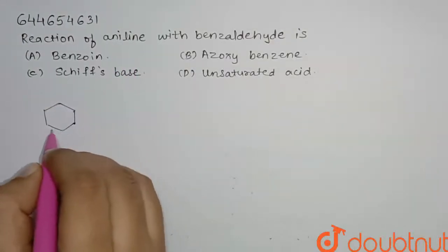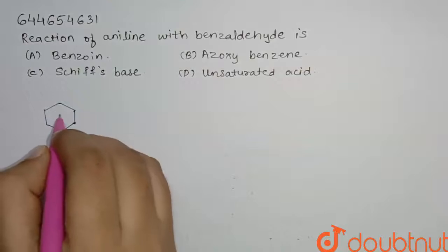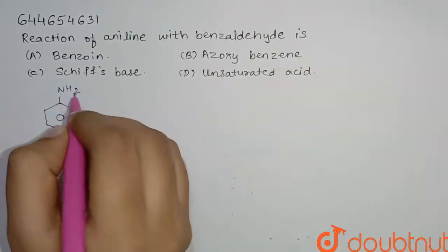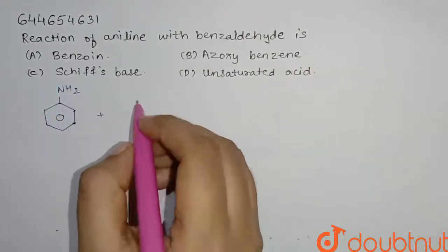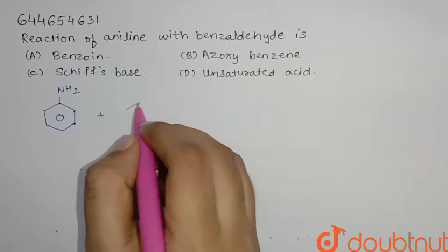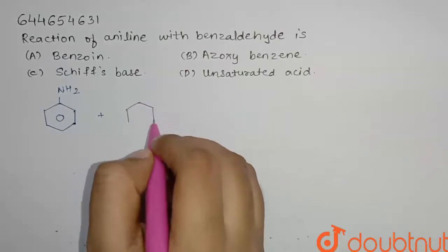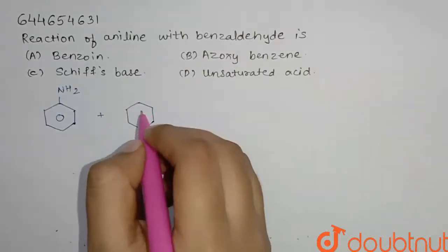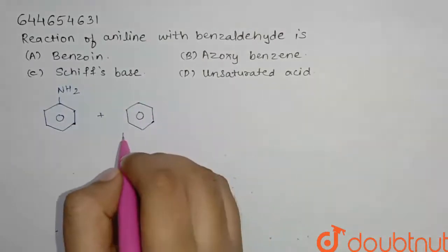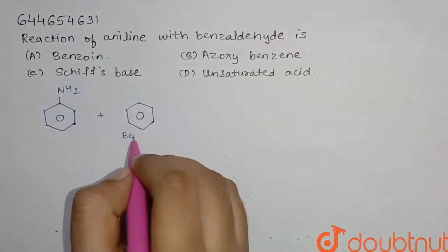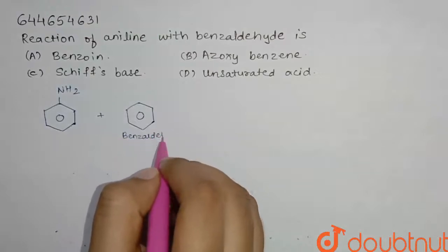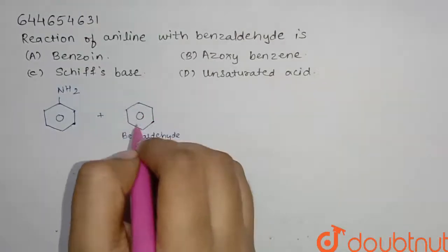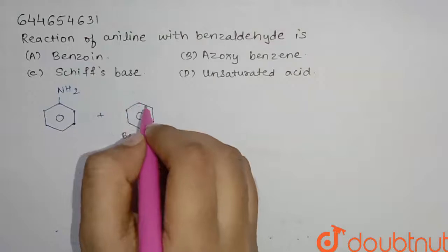Here we are reacting aniline — that is benzene with NH2 — with benzaldehyde, which is benzene attached to CHO.